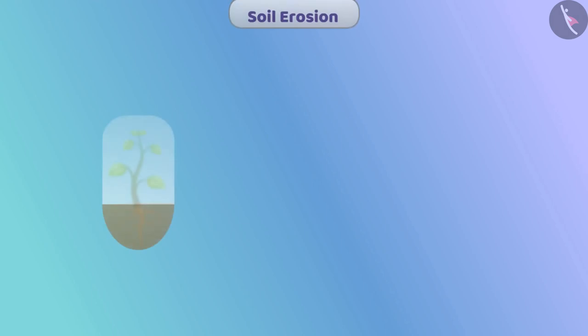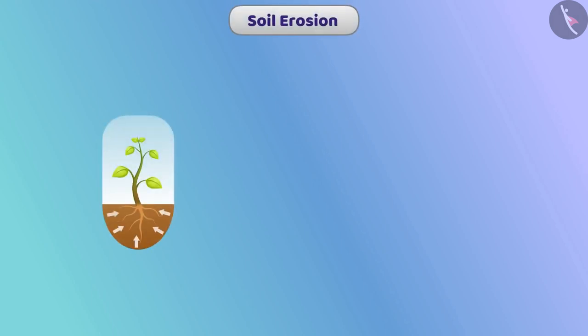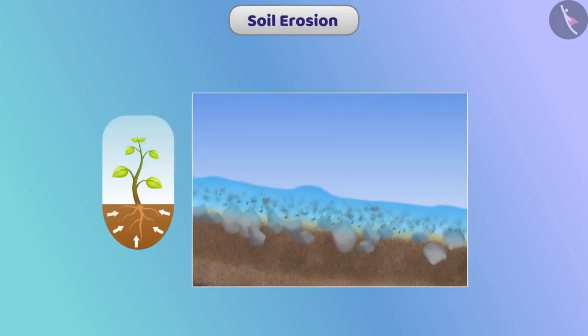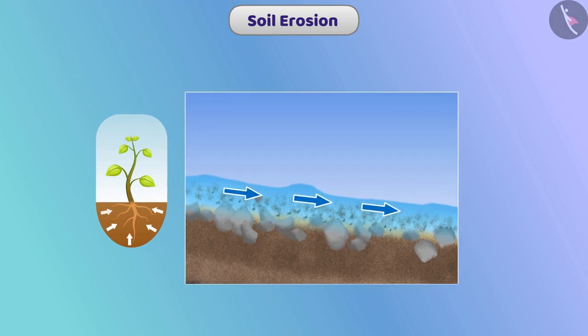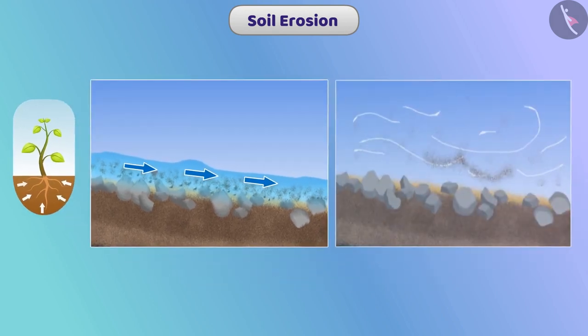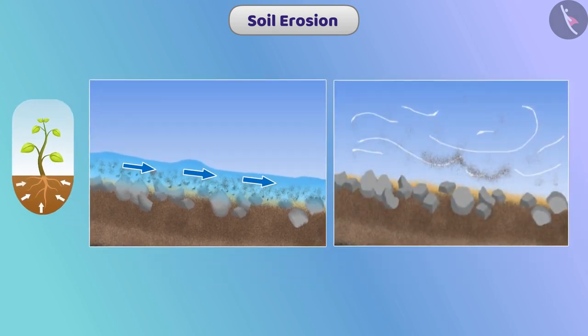Trees hold the soil. Due to the absence of trees, the fertile layer gets washed away with rainwater and blows away with the wind. This is what we call soil erosion.